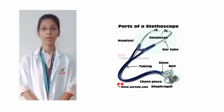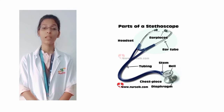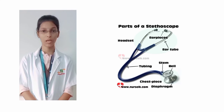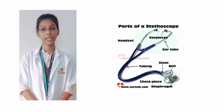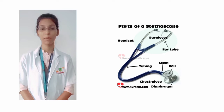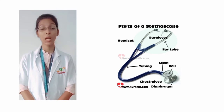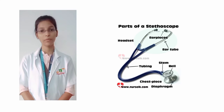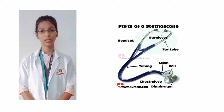Parts of the stethoscope. Chest piece: The chest piece is also known as the head, is round in shape, and is the central part of the device. Diaphragm: The round and circular end of the chest piece is the diaphragm. It can detect sounds with high frequency in large areas of the patient.